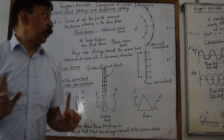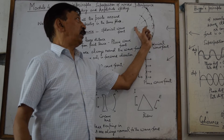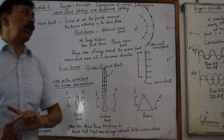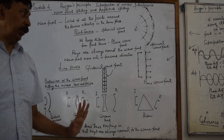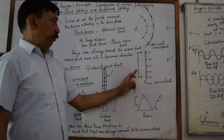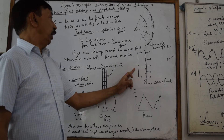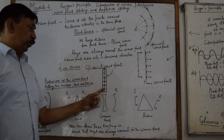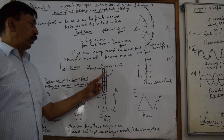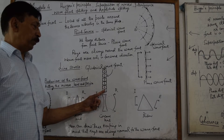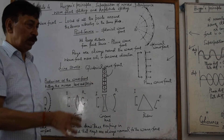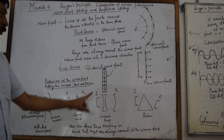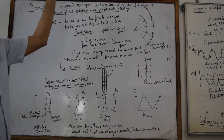Rays are always normal to the wavefront — you can observe the rays here, which are always normal to the wavefront. The wavefront always travels in the forward direction, never in the backward direction. If we take a line source instead of a point source, we will have each point on this line as a source of spherical wavefronts, which can be contained in a cylinder, and the wavefront will therefore be a cylindrical wave — just like a tube-like configuration.